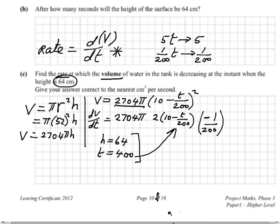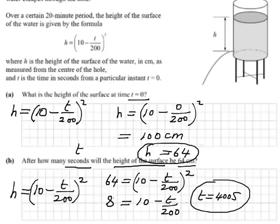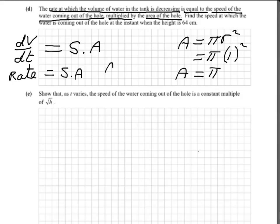Working out the area of the hole: area equals pi r squared since it's a circle. Going back to the question, the radius of the hole is 1, so putting in 1 squared gives area equals pi. So if rate equals speed times area, then speed equals rate divided by area, which is rate divided by pi. And that's part D done.